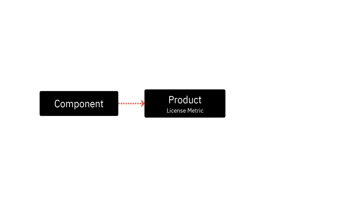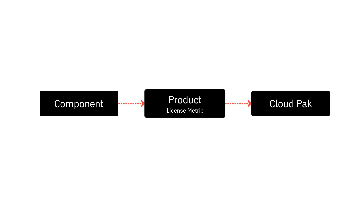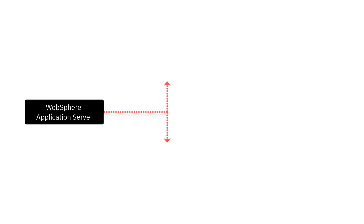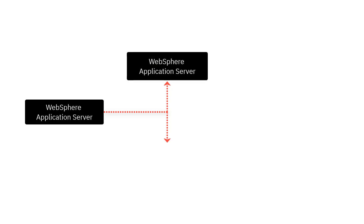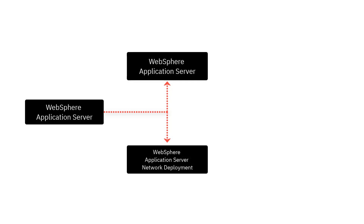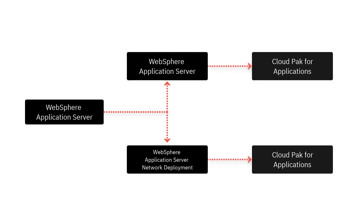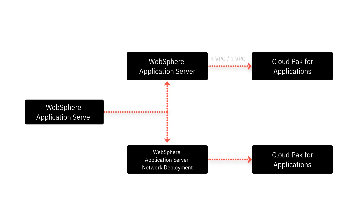To assign non-containerized products to Cloud Packs, you first classify components discovered by License Metric Tool to products with proper license metrics, then you assign products to Cloud Packs. This approach is necessary because a single component can belong to different product flavors that have different conversion ratios. For example, the component WebSphere Application Server can be part of two products: WebSphere Application Server, or WebSphere Application Server Network Deployment. When these products are part of Cloud Pak for Applications, their conversion ratios differ — four VPCs to one VPC for WebSphere Application Server, and one VPC to one VPC for WebSphere Application Server Network Deployment.